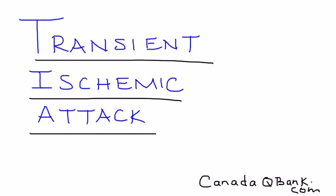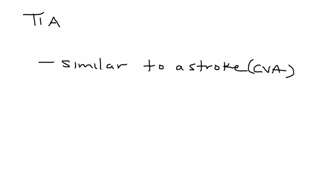Transient ischemic attack or TIA. Transient ischemic attacks are essentially very similar to strokes. The key difference is that their duration is less. By definition, it's less than 24 hours, but in most cases the symptoms resolve within one hour, and many oftentimes resolve in less than five minutes.